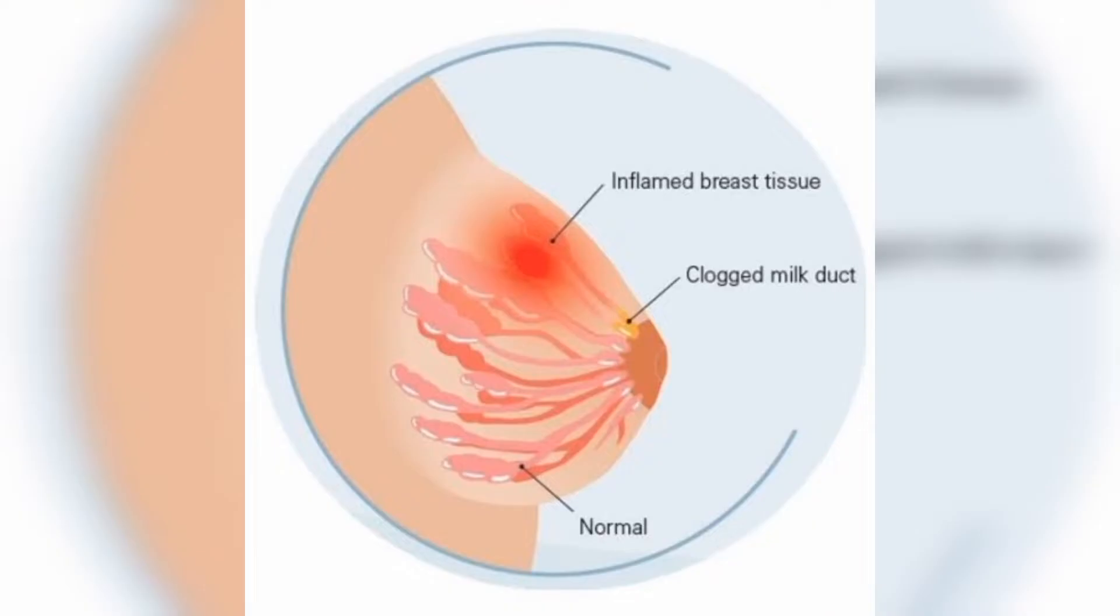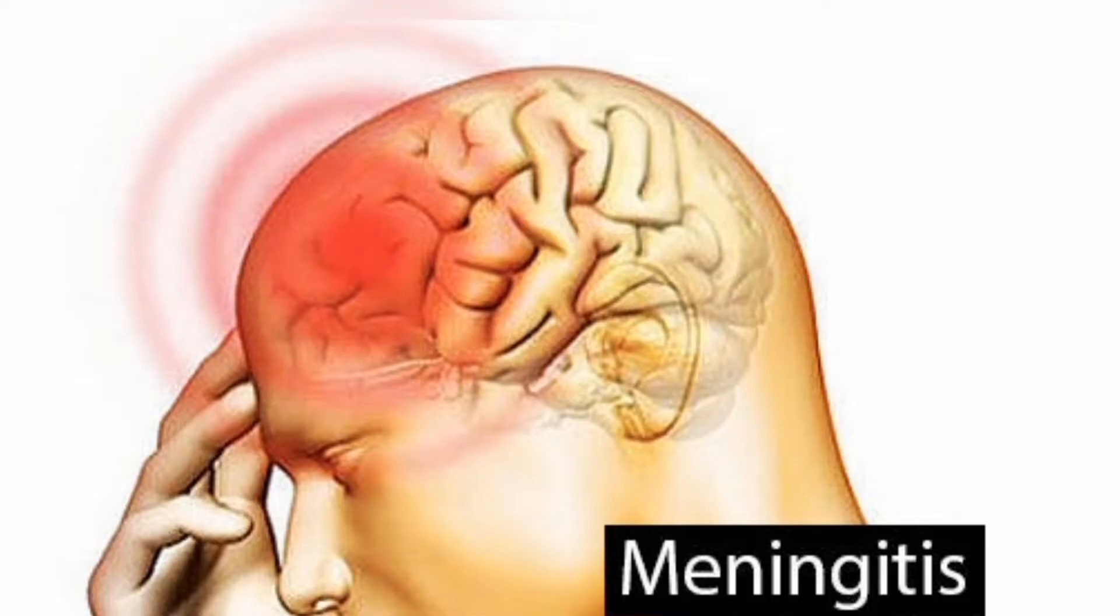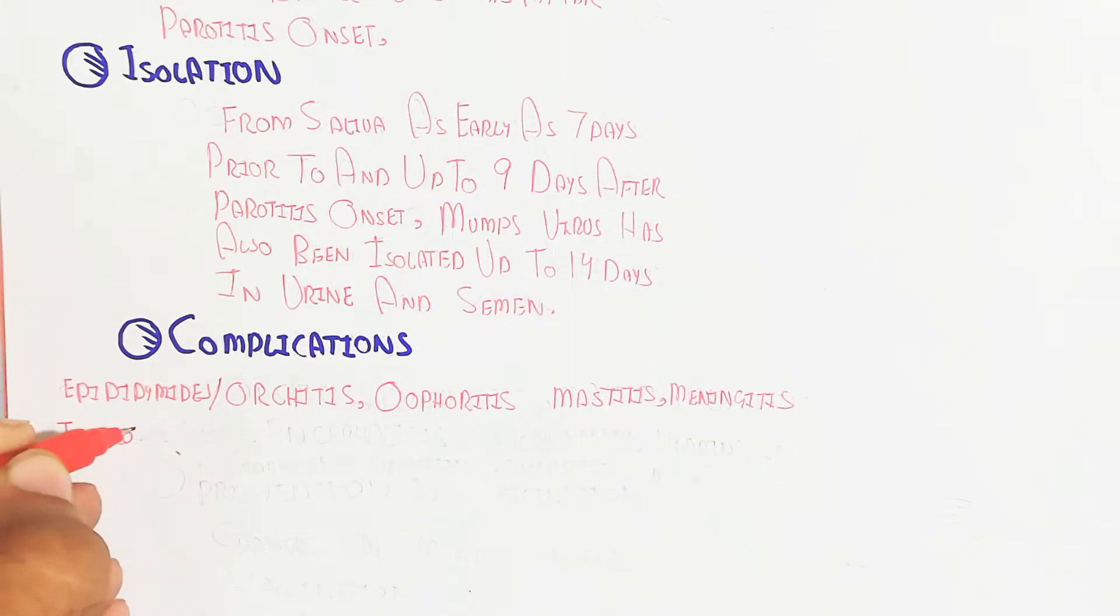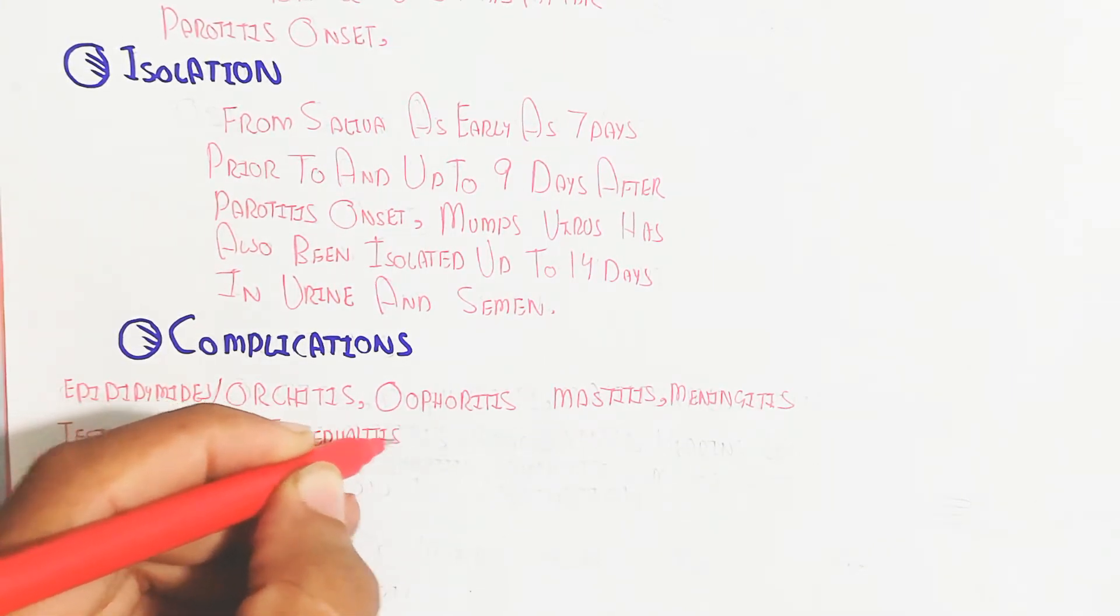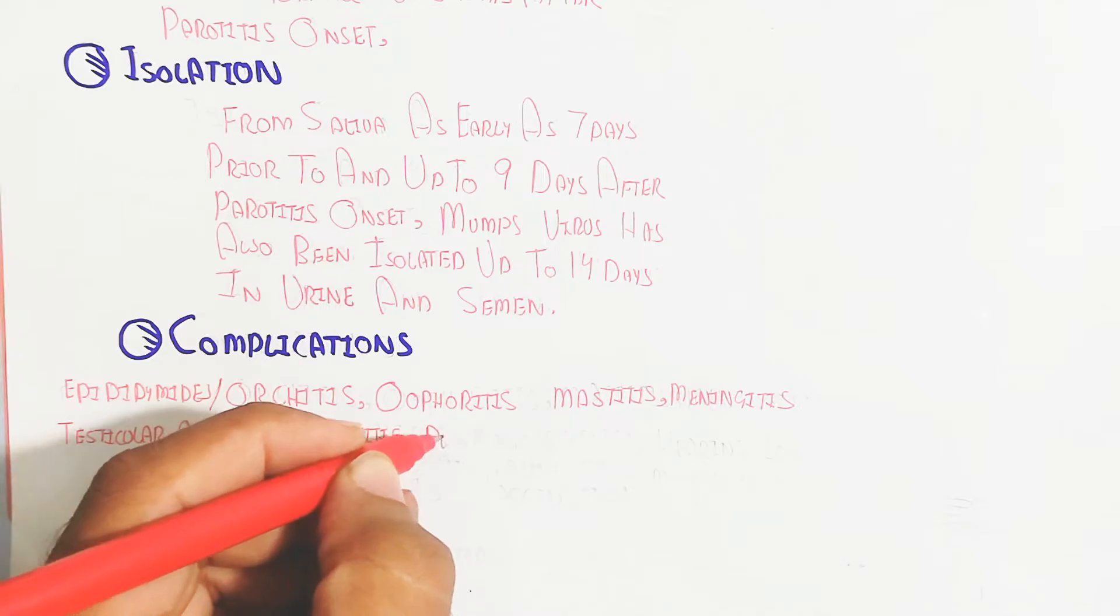Meningitis means cerebrospinal fluid infection and inflammation. Testicular atrophy and encephalitis is basically bulging of the head.